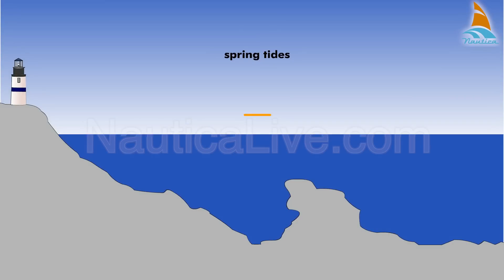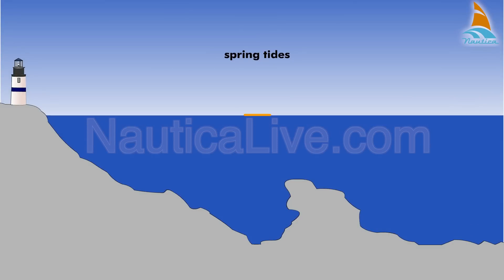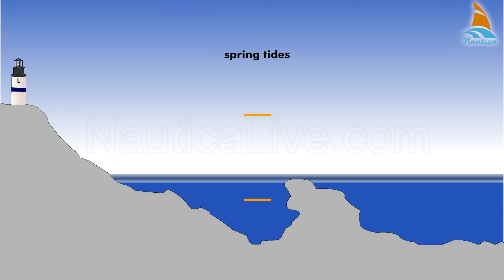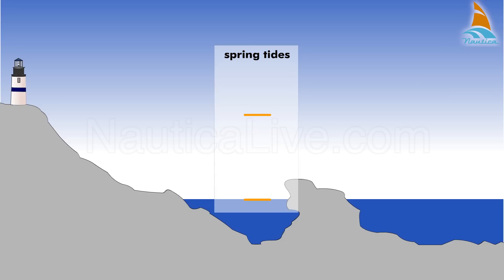Spring tides are those with higher high tides and lower low tides than normal, or a greater range of tide.